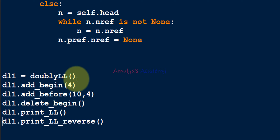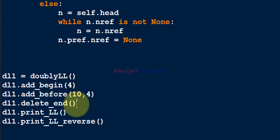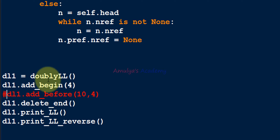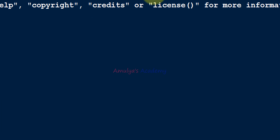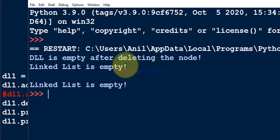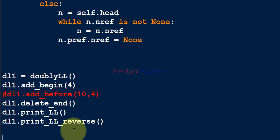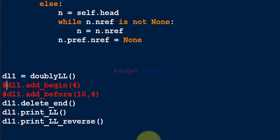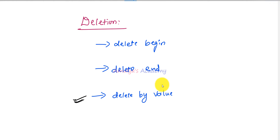Let's see how delete_end works. Our doubly linked list contains 10 and 4. If we call delete_end it deletes 4, so we get only 10. If we comment out the insert for the second node so only one node remains and delete it, the doubly linked list is empty. And if the list is completely empty and we try to delete, we get: DLL is empty, can't delete.